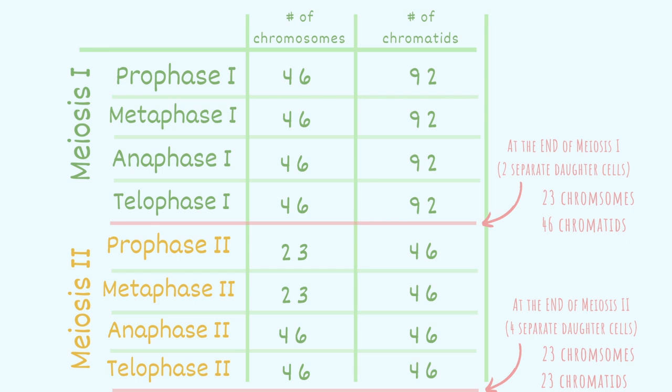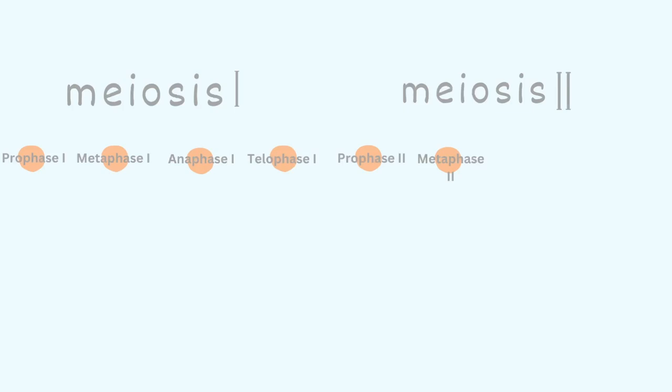Let's go ahead and get started. Meiosis is broken down into meiosis 1 and meiosis 2. Much like mitosis, there is a prophase, metaphase, anaphase, and telophase. In meiosis 1, we always put the roman numeral 1 after each phase. In meiosis 2, we also have prophase, metaphase, anaphase, and telophase, and we put the roman numeral 2 at the end of these, so we know exactly where we are in meiosis.